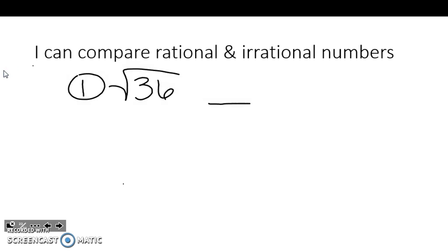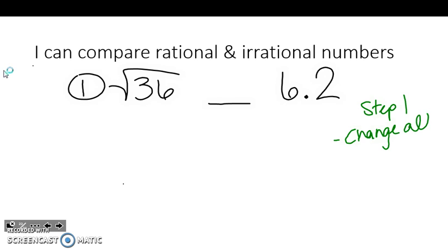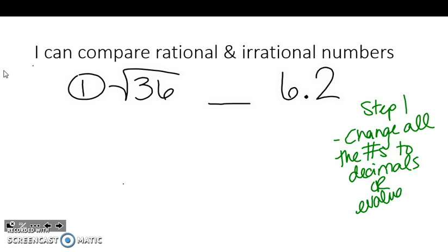So we have the square root of 36 and 6.2. The first thing we have to do — step one — is we have to change all the numbers to decimals or evaluate them. What I mean by that is I might not know what the square root of 36 is right off the top of my head, so I have to take that and punch it into the calculator.